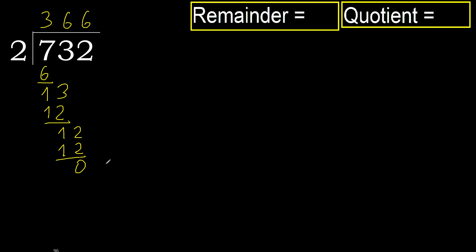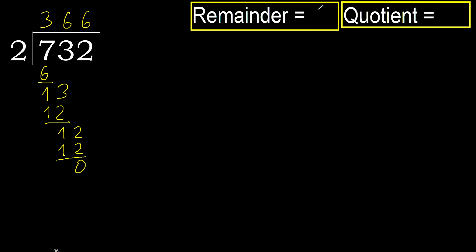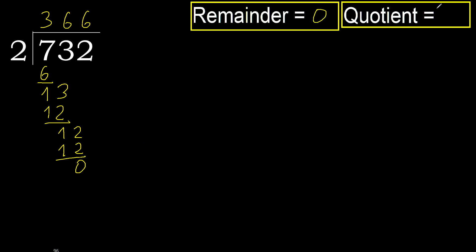There is no next number, therefore finish it. 0 remainder. Therefore 732 divided by 2 is 366.